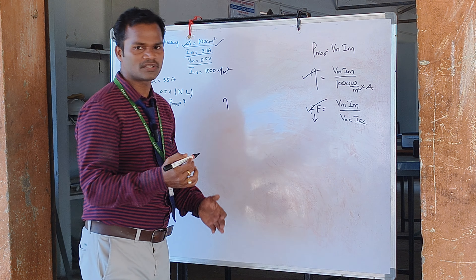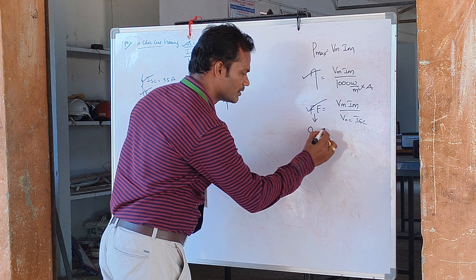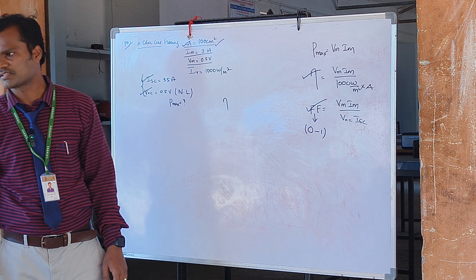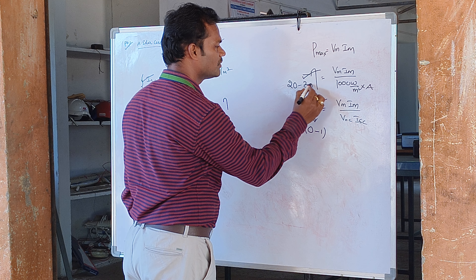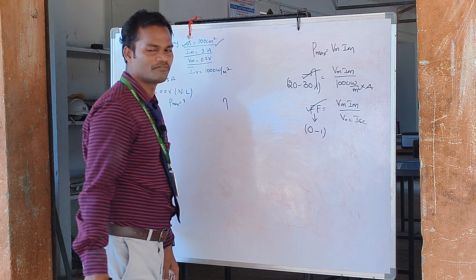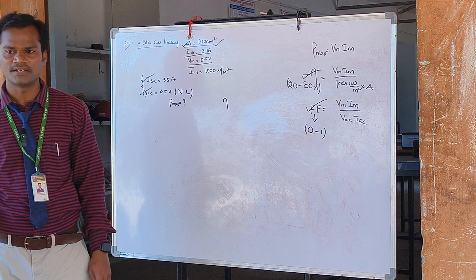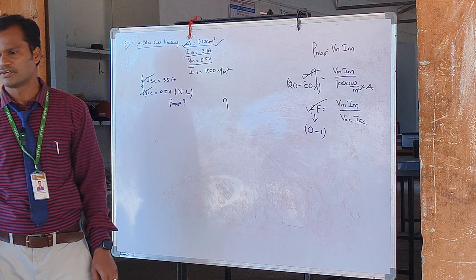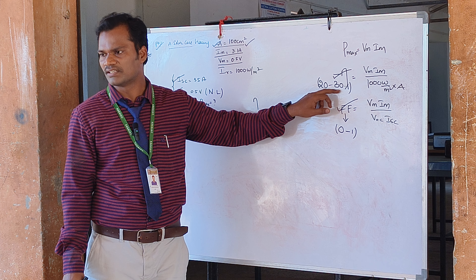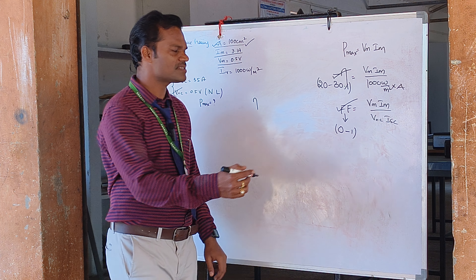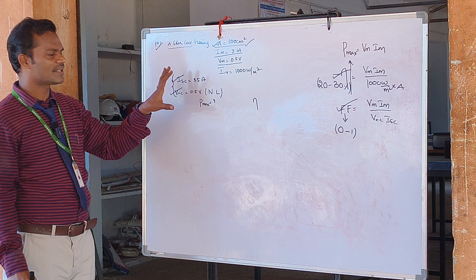While solving the problem you may wonder whether your answer is correct. The fill factor ranges from 0 to 1, with minimum value 0 and maximum value 1. Efficiency ranges from 20% to a maximum of 30% with available technology. You have already studied the different solar technologies: mono-crystalline, poly-crystalline, and thin film. Mono-crystalline delivers the highest efficiency of 30 percentage.